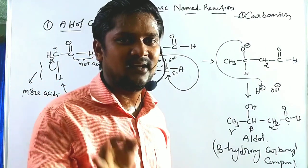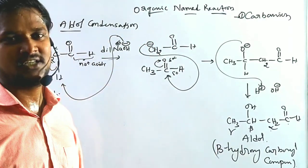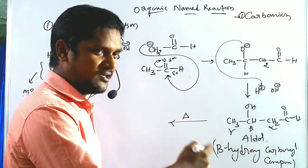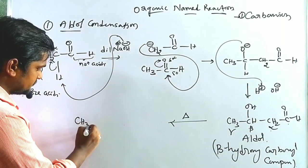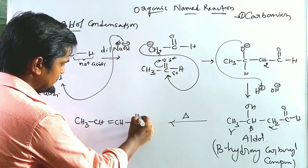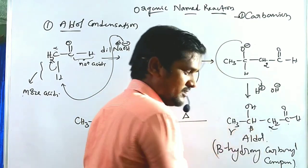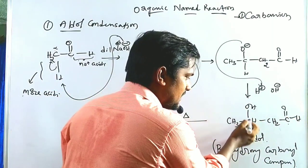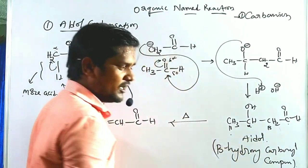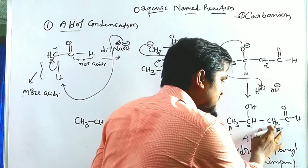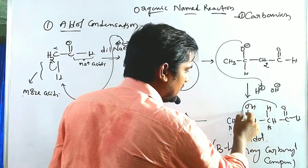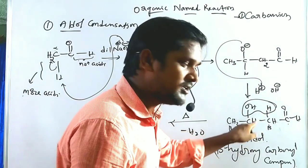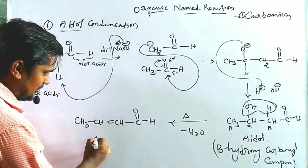When we supply heat to the aldol compound, the OH group at the alpha position (relative to the carbonyl) and the H from the beta position are eliminated together as a water molecule. This elimination under heating conditions forms a double bond, giving an alpha,beta-unsaturated carbonyl compound.